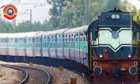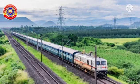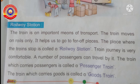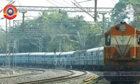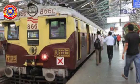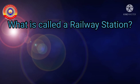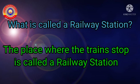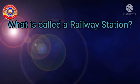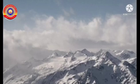Dear children, look at this picture. Do you know the name of this vehicle? Yes, very good — it is a train. This train moves only on rails. We can go to far-off places by train. The place where the train stops is called a railway station.